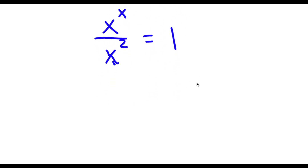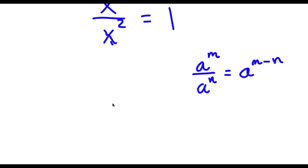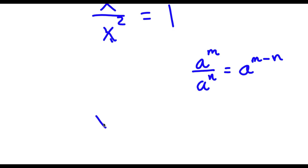Now if I have something in the form a to the power of m over a to the power of n, this is equal to a to the power of m minus n. So in this case x to the power of x over x to the power of 2 is going to equal x to the power of x minus 2, which is equal to 1.